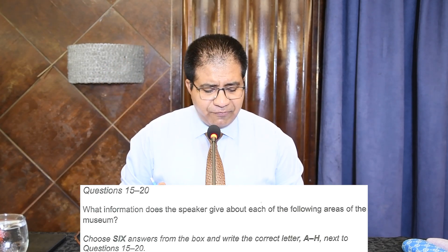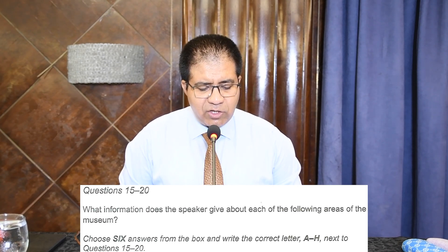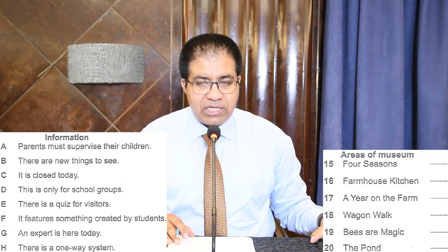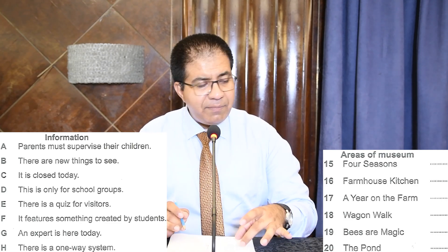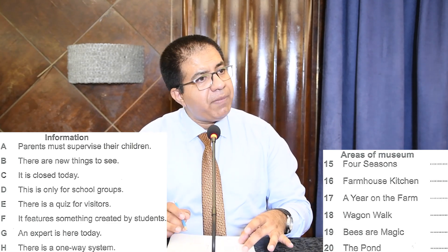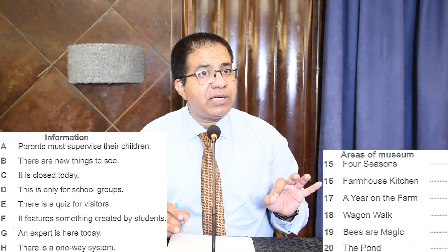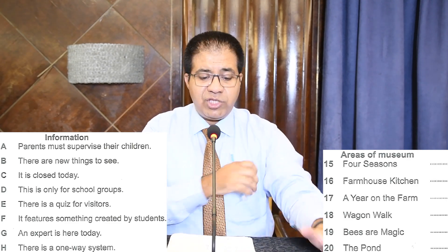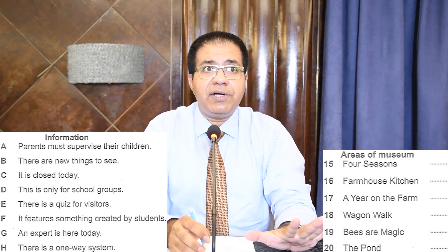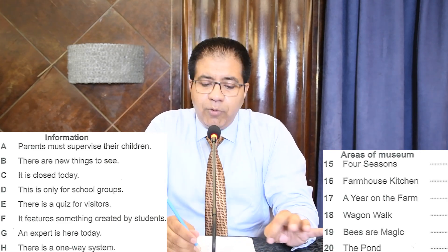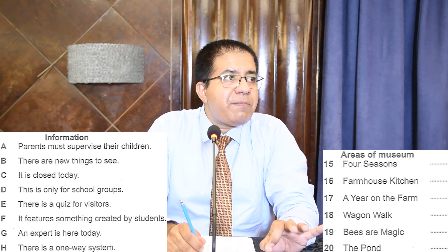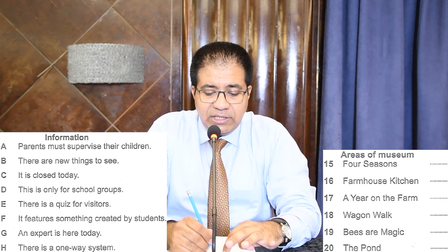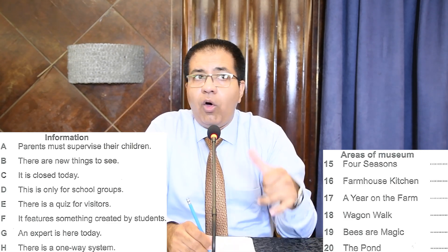Questions 15 to 20: areas of the museum — Four Seasons, Farmhouse Kitchen. The audio will discuss each one by one. Instead of reading the questions, read the options. The options in the audio will be presented in a similar way to what is listed.